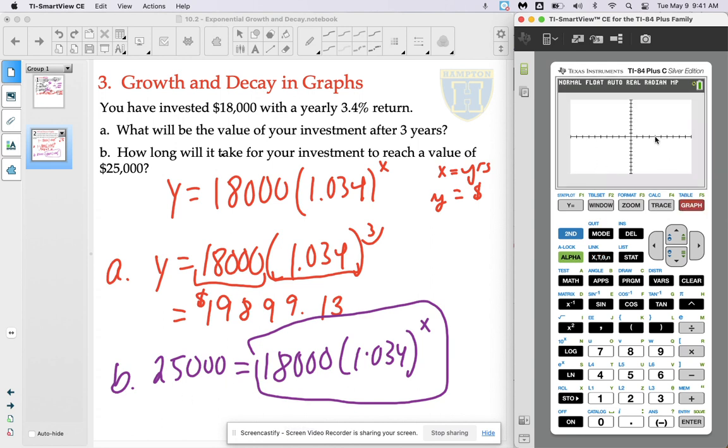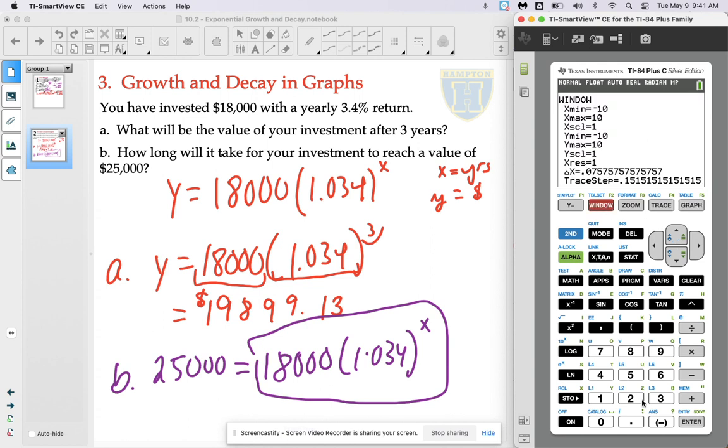Now obviously with the standard window, I'm not going to get anything out of this. This is an 18,000 initial value with an increase of 3%. It's going to go up only from there. I don't know how long it's going to increase for, so I need to be careful when I set my window.